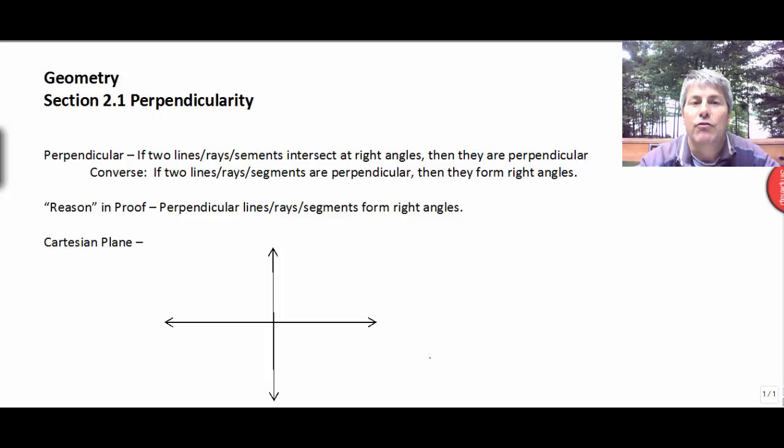If two lines, rays, or segments are perpendicular, then they form right angles. So something you might use as a reason in a proof would be perpendicular lines form right angles. Or you could insert rays form right angles or perpendicular segments form right angles. It just depends on what you're given.